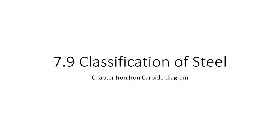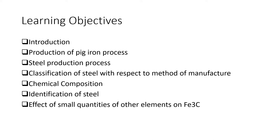Assalamu alaikum students. Today we will discuss about the classification of steel. In the previous lecture we have discussed the iron-iron-carbide diagram and construction of phase diagram. Our learning objectives are: classification of steel with respect to method of manufacture, classification with respect to chemical composition, identification of steel when provided several types of standards, and the effect of small quantities of other elements on iron-iron-carbide.